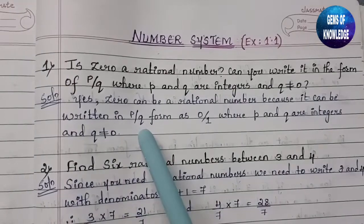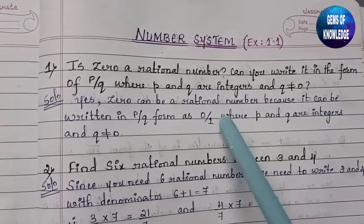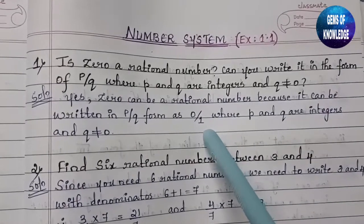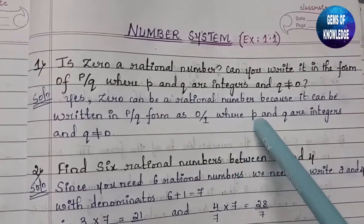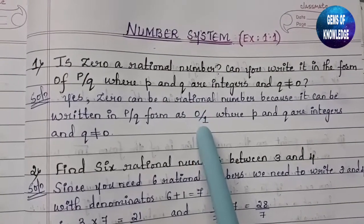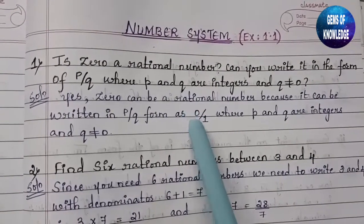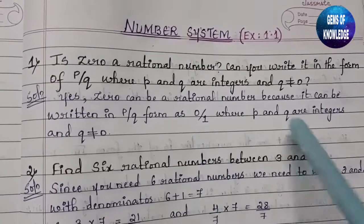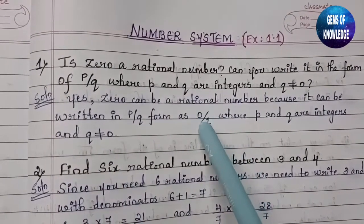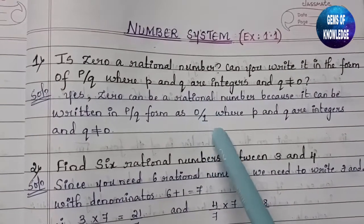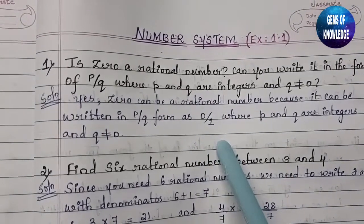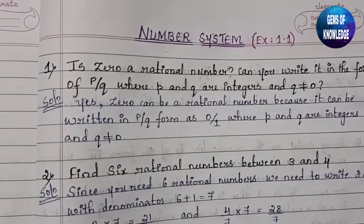Zero can be written in the p/q form as 0/1, which equals zero itself, where p and q are integers. Here p is zero and q is one. You can see that q is not equal to zero — the denominator is not zero. So p can be zero but q cannot be zero. That is the answer for the first question.